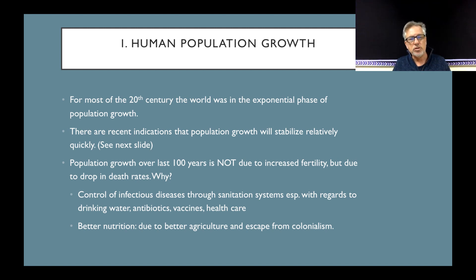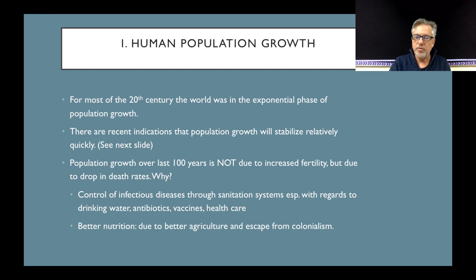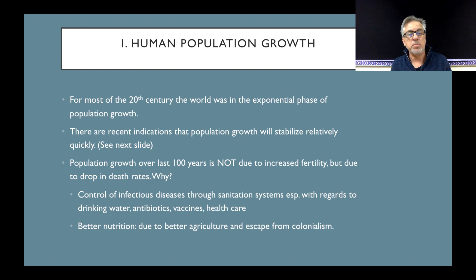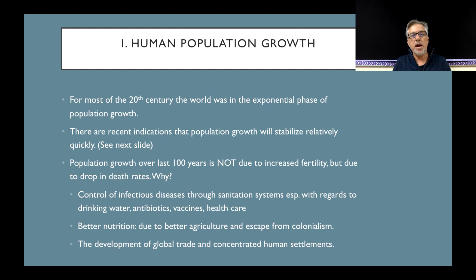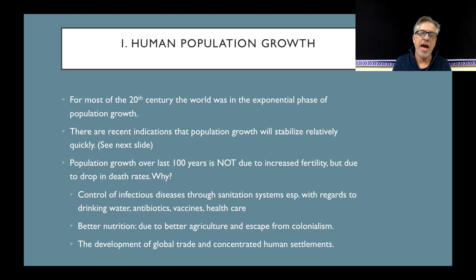It's also due to generally better health care for more people and better nutrition. Some people claim that's due to better agriculture, which may in part be true, and other people claim it's due to escape from colonialism, which I think is also partly true. And other people think it has to do with the rise of global trade and the concentration of human settlements, which means people are more likely to become educated and to have access to health care. So those are just some of the ideas about why the death rate has dropped.